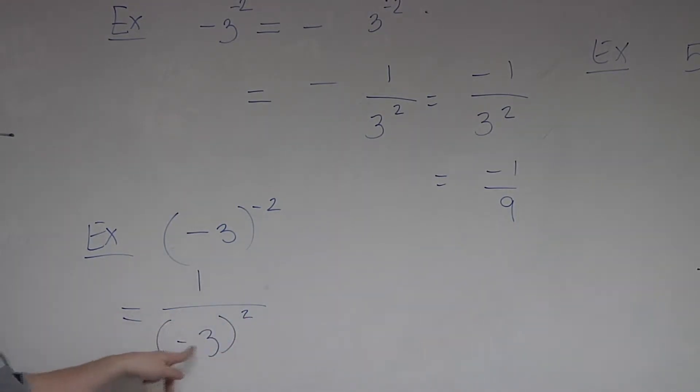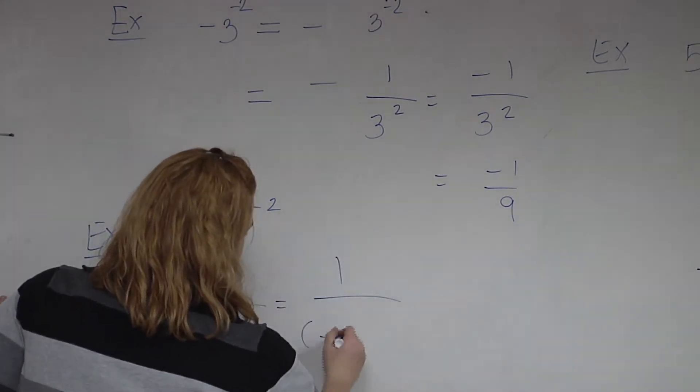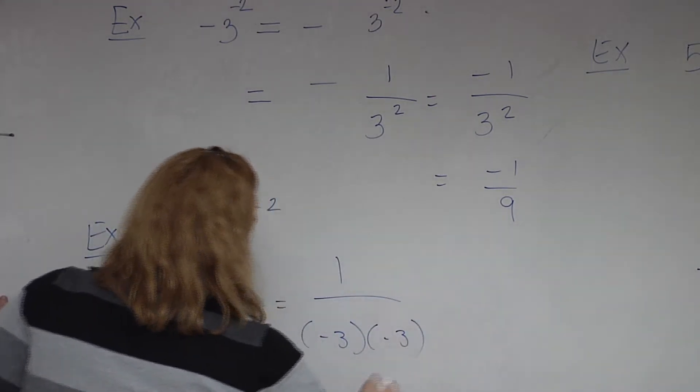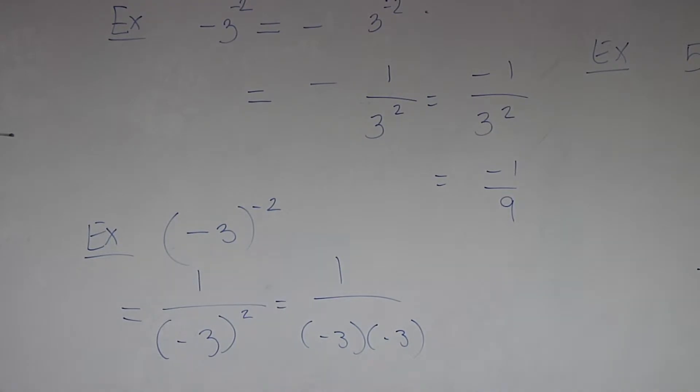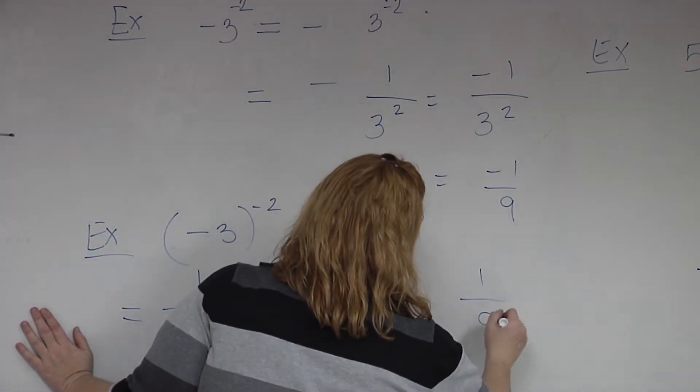So this one is going to become 1 over negative 3 squared. Now this power 2 is still affected by both of these. So it becomes 1 over negative 3 times negative 3. There's two of them. Negative 3 times negative 3? Nine. What type of 9? Positive or negative? Positive.